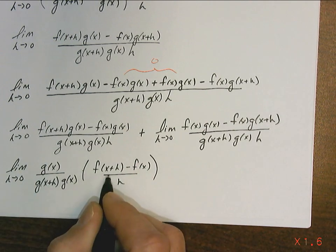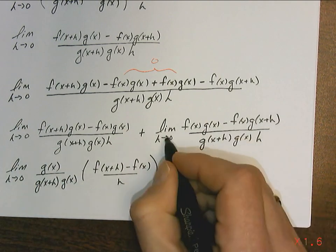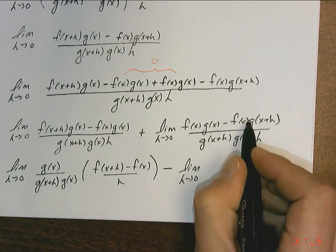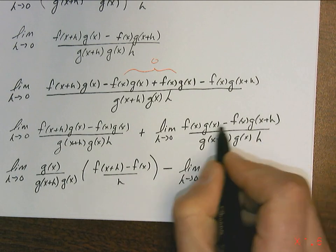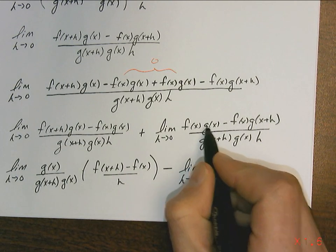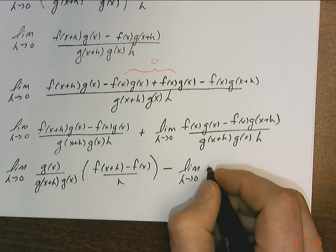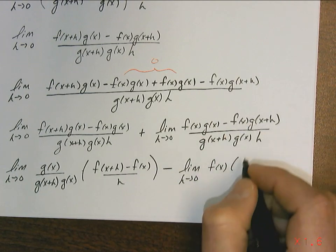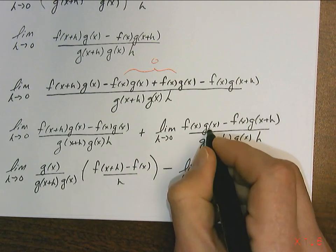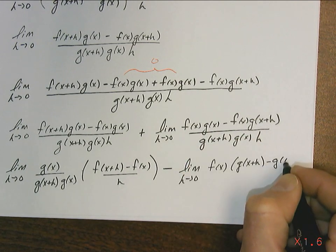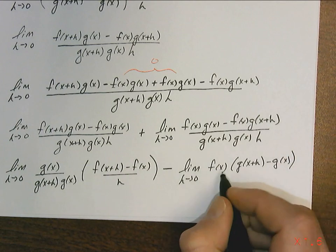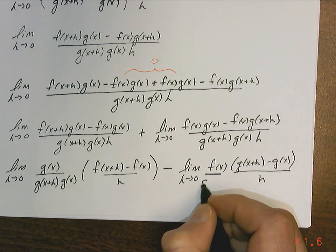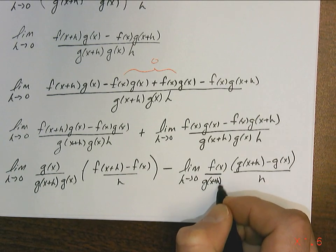That's the f prime term from earlier. Then I factor out a negative from the second part, making the first term positive and the second negative. At the same time, I factor out f of x. So the f of x comes out, and again we get g of x plus h minus g of x over h — all over g of x plus h times g of x.